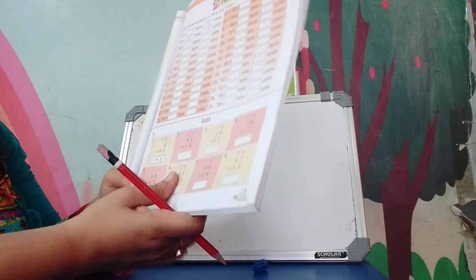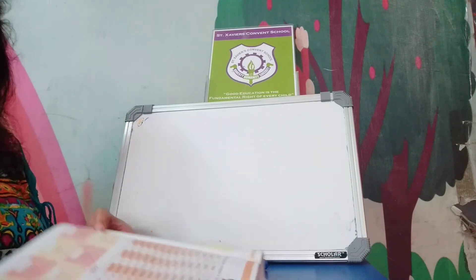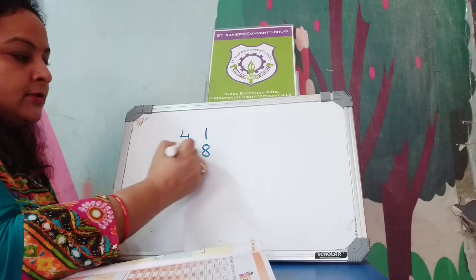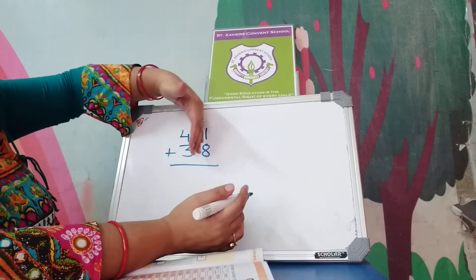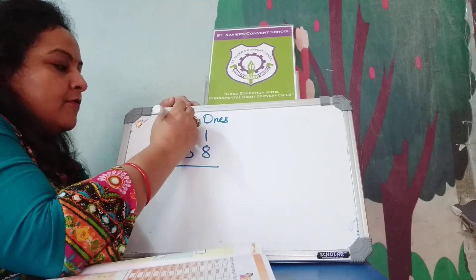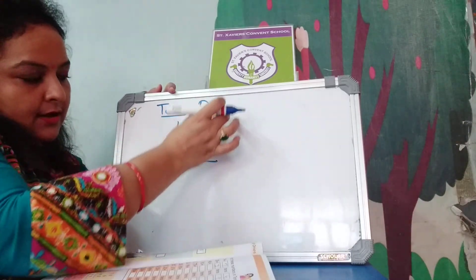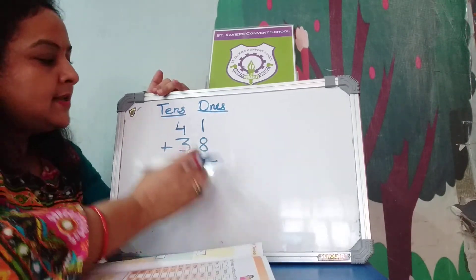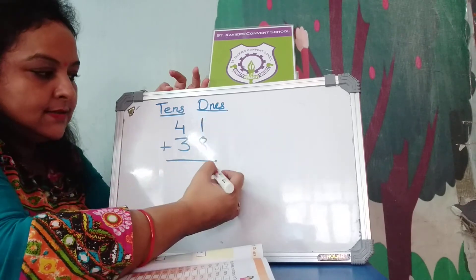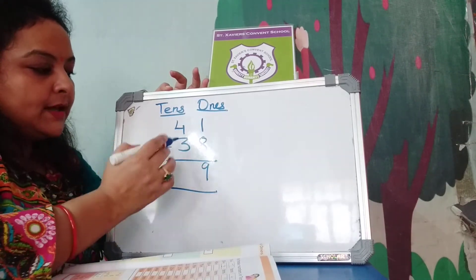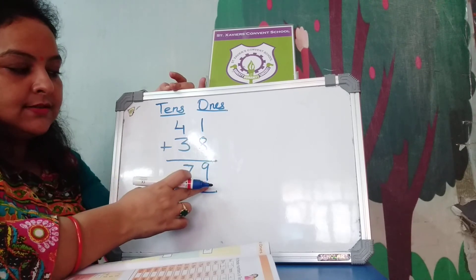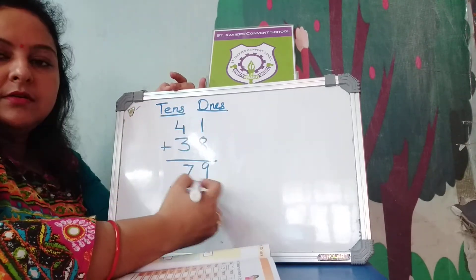Addition of 2-digit numbers. How will you add? Suppose: tens column 4 and 8, ones column 1 and 3. The right-hand side numbers are ones and the left-hand side numbers are tens. First of all we add ones: 8 plus 1 is 9. Then tens: 4 plus 3 is 7. So 7 tens and 9 ones makes 79.